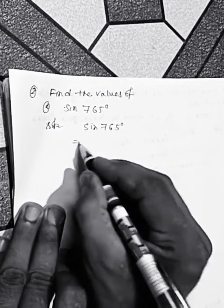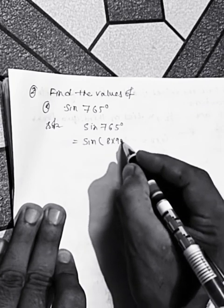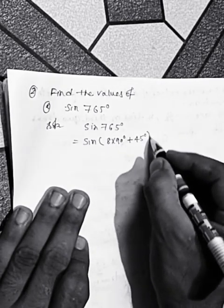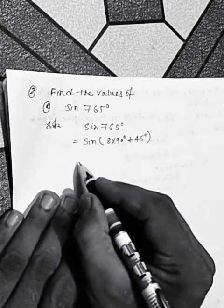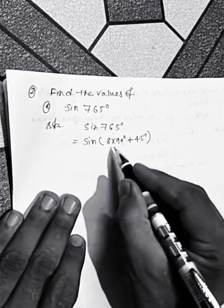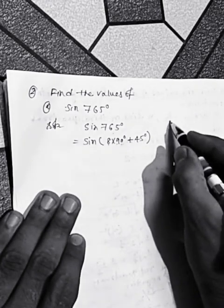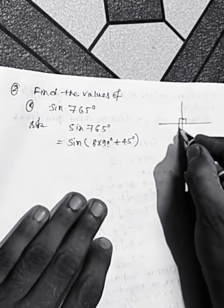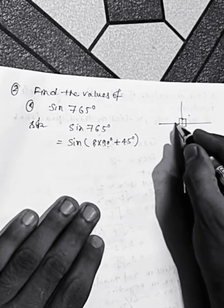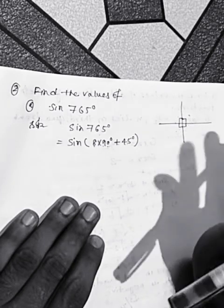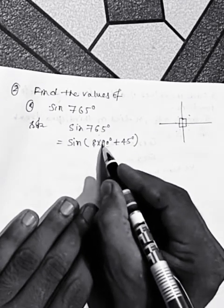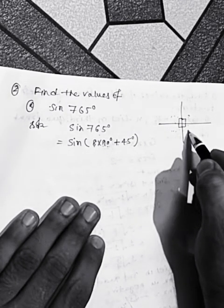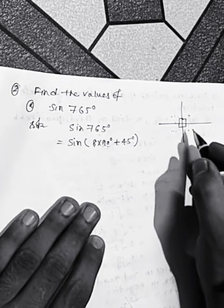Solution: sine of 765 degrees can be written as sine of 8 times 90 degrees plus 45 degrees, since 720 plus 45 equals 765 degrees. Now, each quadrant is 90 degrees: 90, 180, 270, 360 — one complete revolution. So 8 times 90 will lie in the fourth quadrant. Counting: 1, 2, 3, 4, 5, 6, 7, 8 — yes, the fourth quadrant. Adding 45 degrees means it increases into the first quadrant.